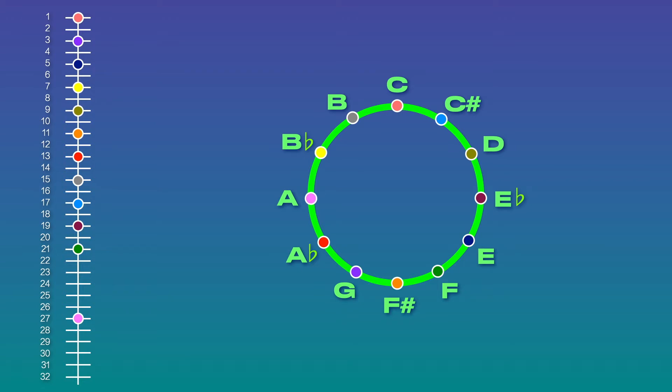I've placed a C scale around a circle, as in the other graphics, but I've also added a line grid of the harmonic series off to the left, correlating each note around the circle to its harmonic frequency with a colored dot.